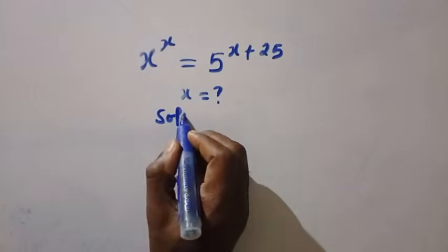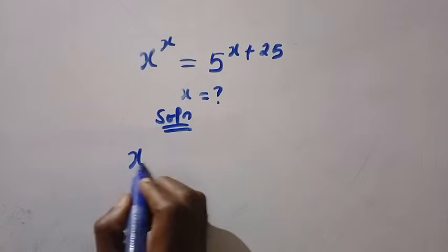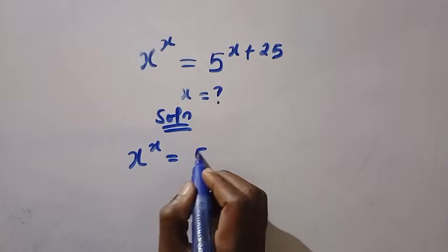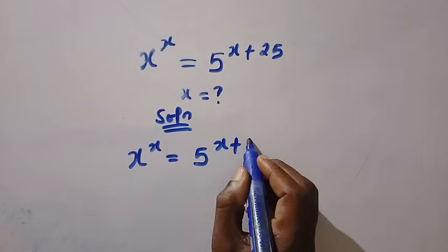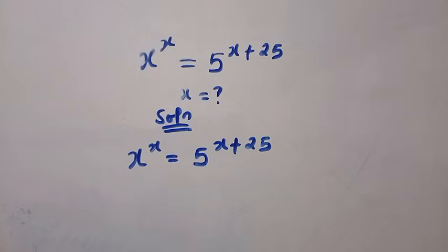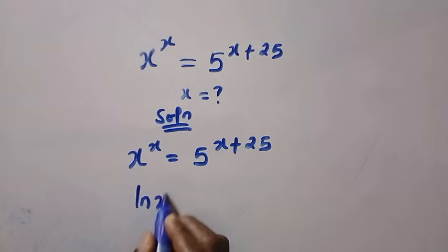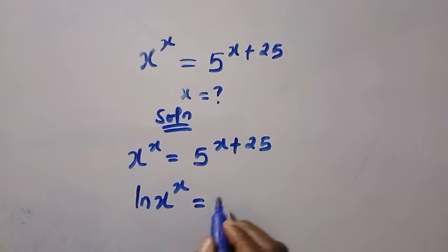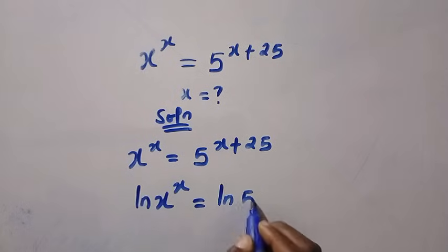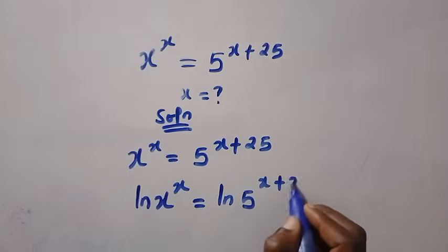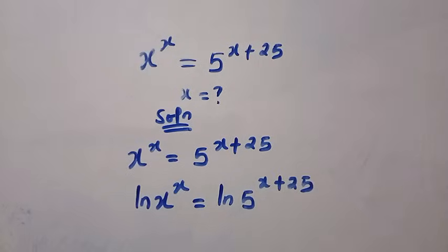Let's consider the solution. Given x power x equals 5 power of x plus 25. So the first step we are going to take is introducing natural logarithm to both sides. Here we have ln x power x equals ln 5 power of x plus 25. Here is the first step.